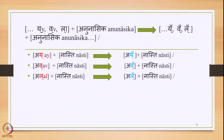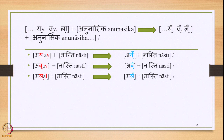Now let us look at specific examples. First: Y, V, L plus Anunasika — the output generated is the nasal variety of Y, V, L plus that Anunasika. Remember, Y, V, L occur at the end of the Padha and the Anunasika sound occurs at the beginning of the subsequent Padha. So we have Ayya plus Nasti: Ya is appearing at the end of the Padha Ayya, and Na appears at the beginning of Nasti.